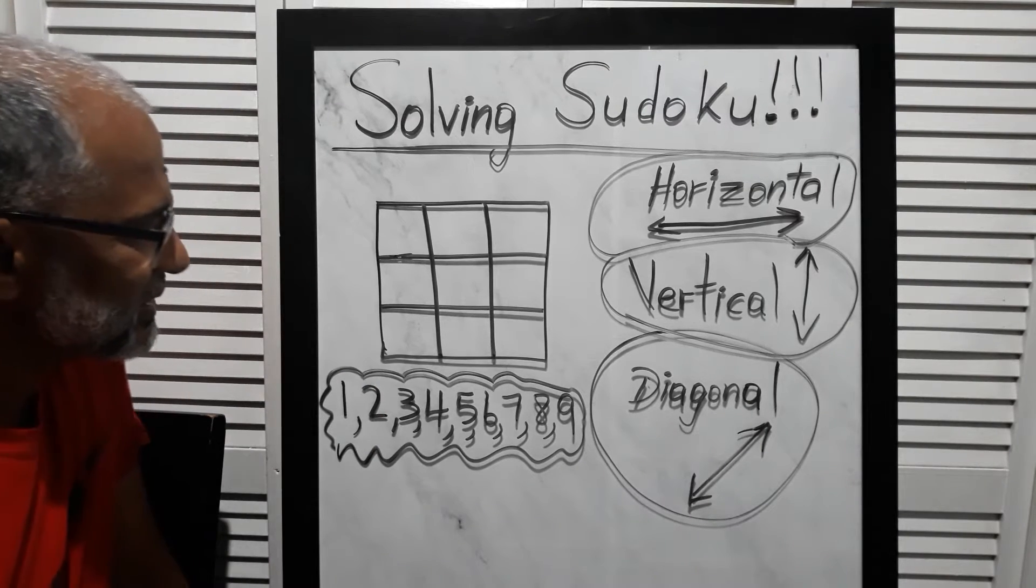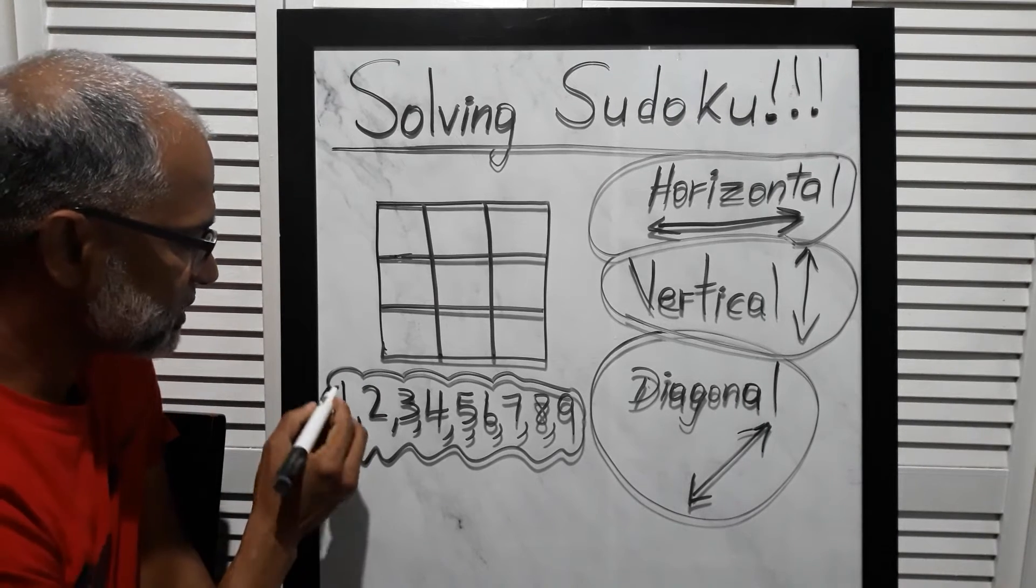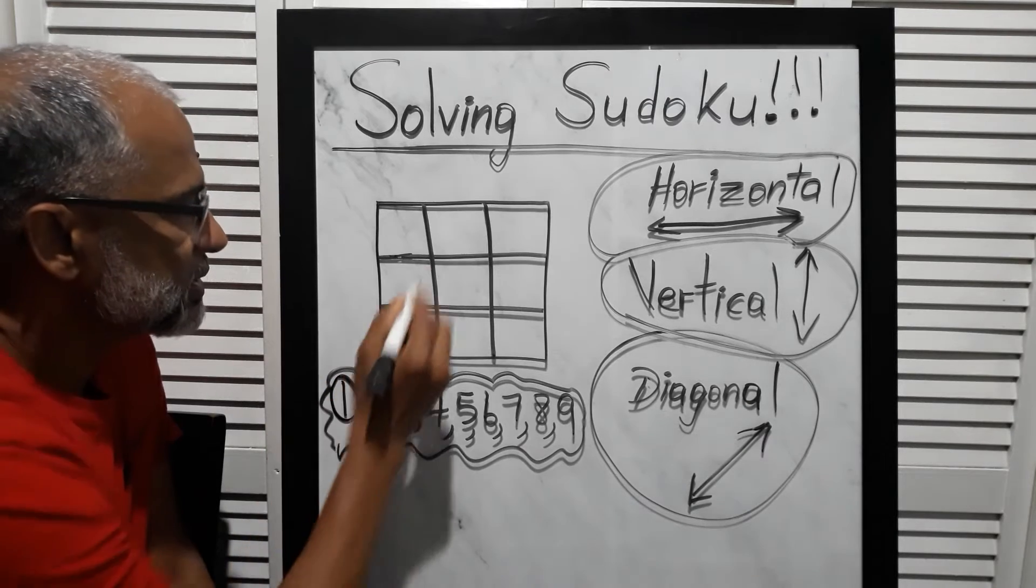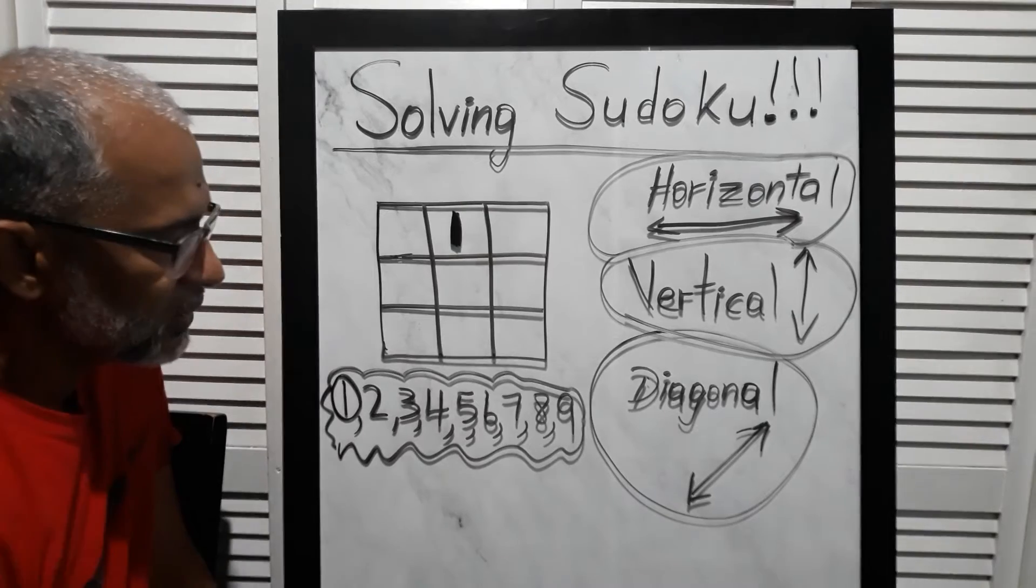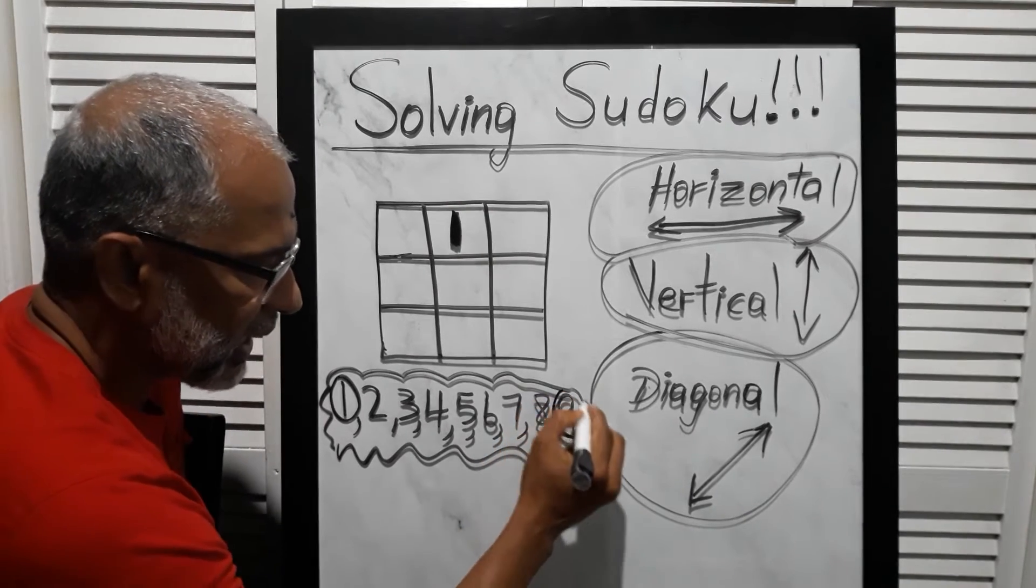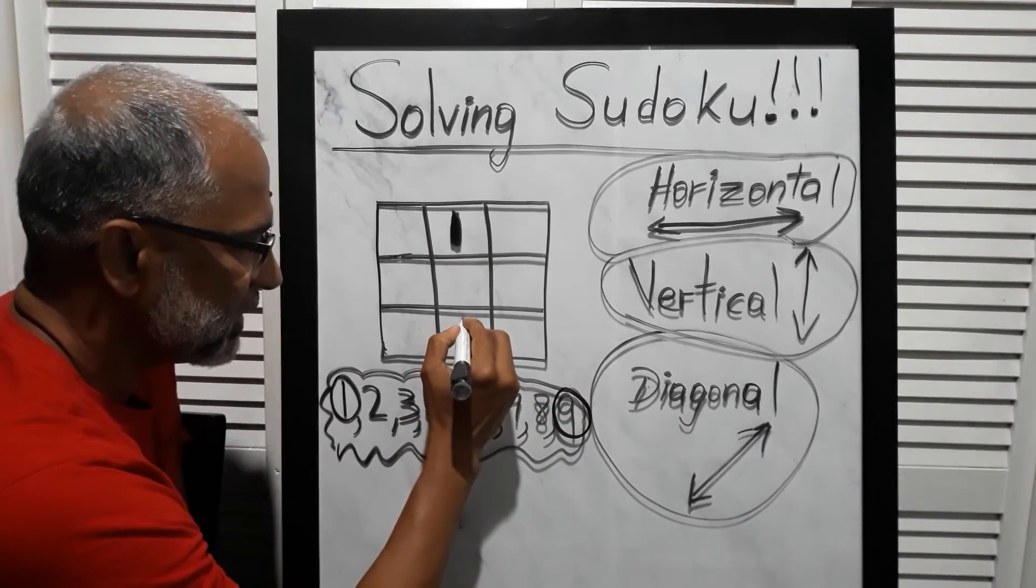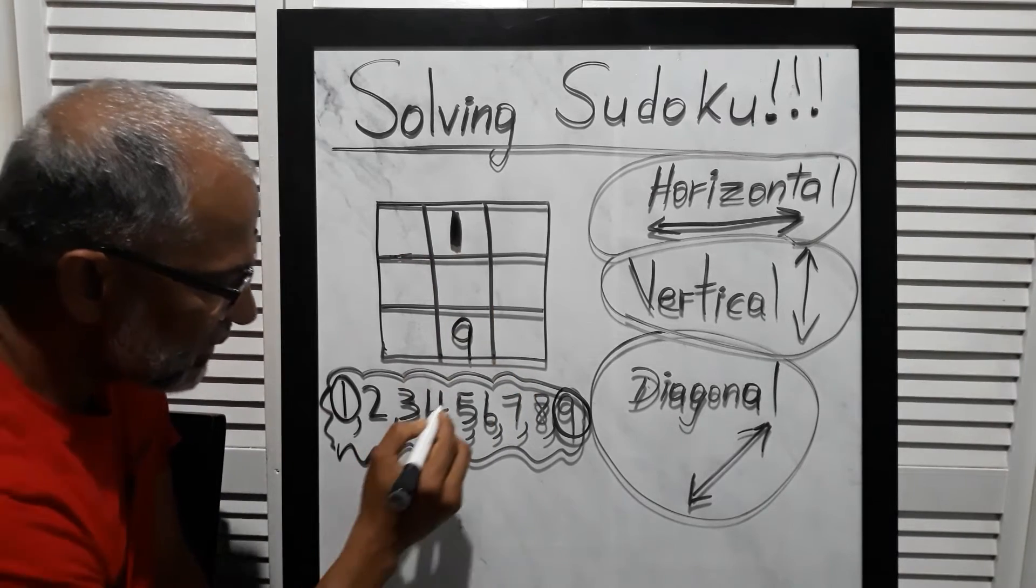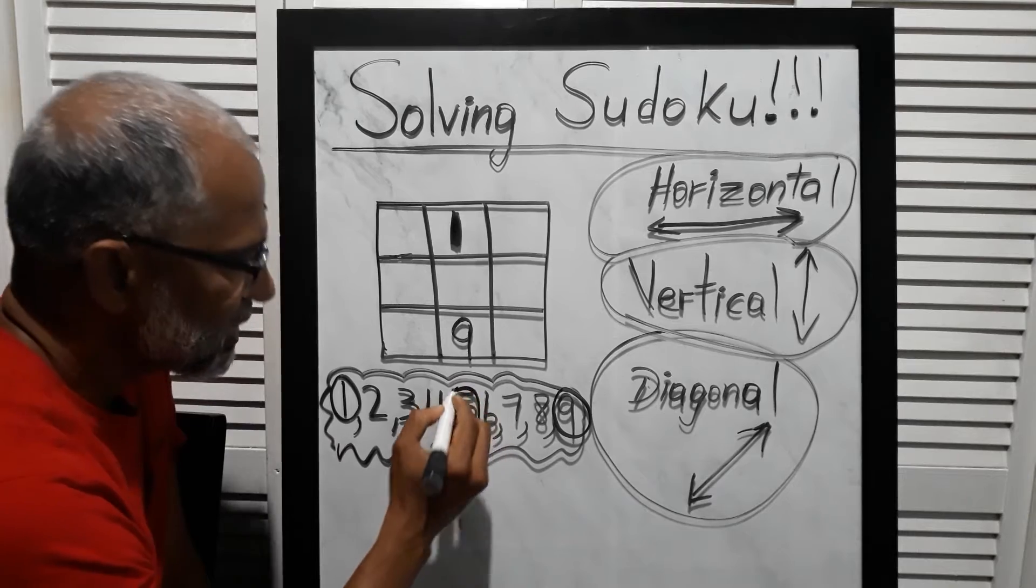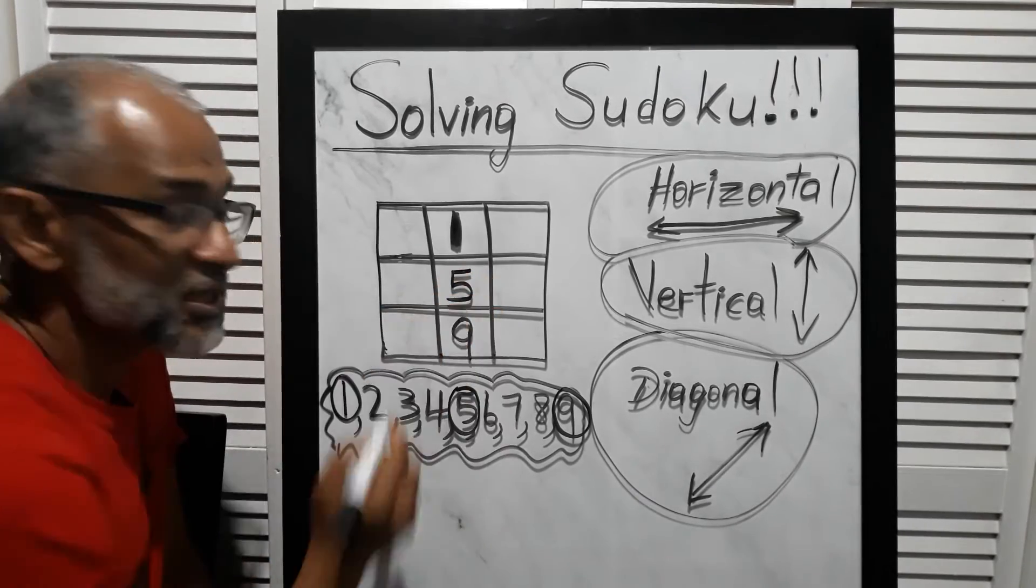All right, so the key for this: the first number is one, so you put it in the middle column here. The last number is nine—you put it in the last row in the second column. Then the middle number is five, so you put the five here.